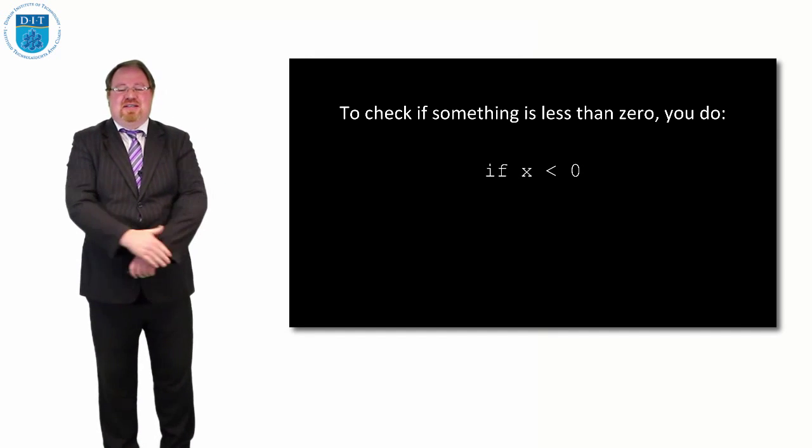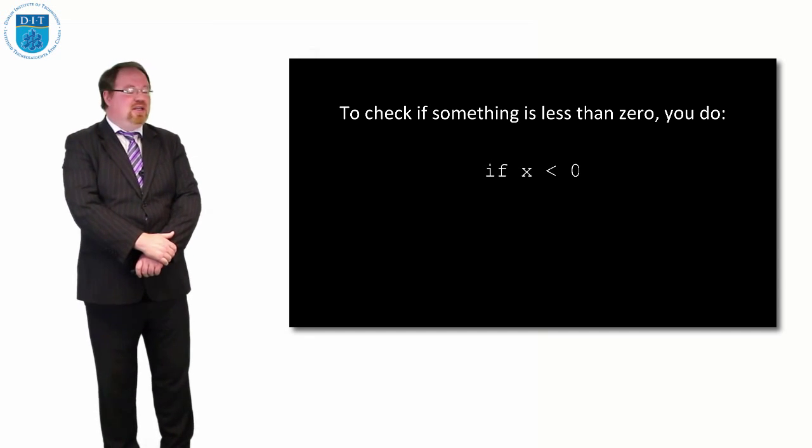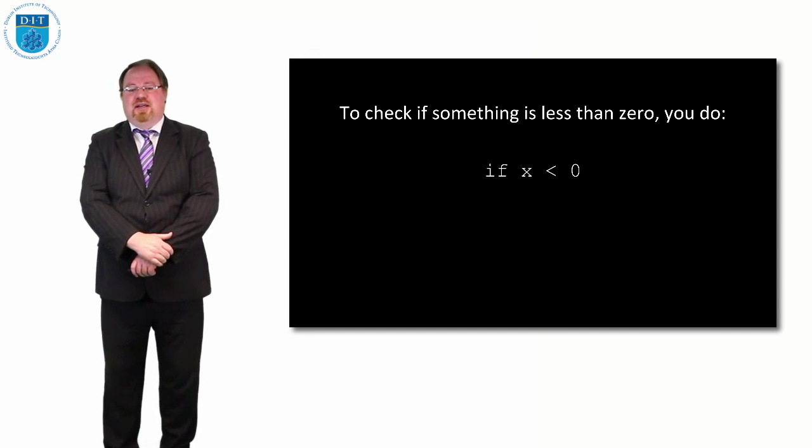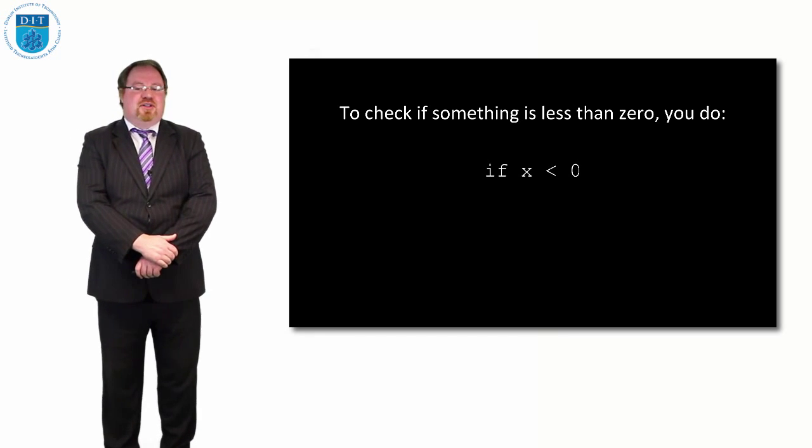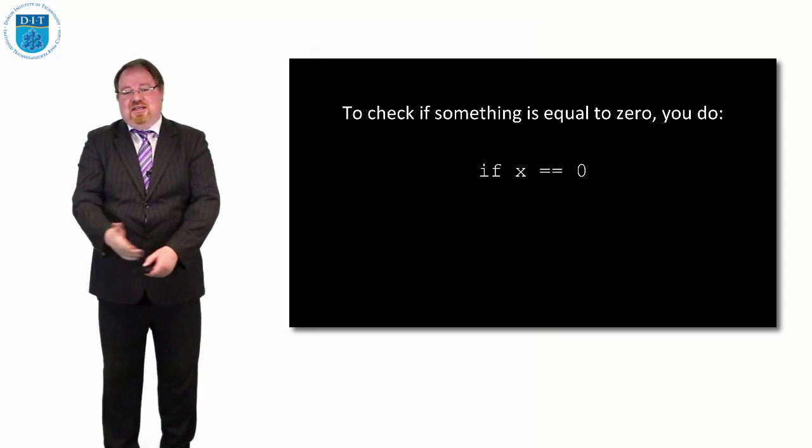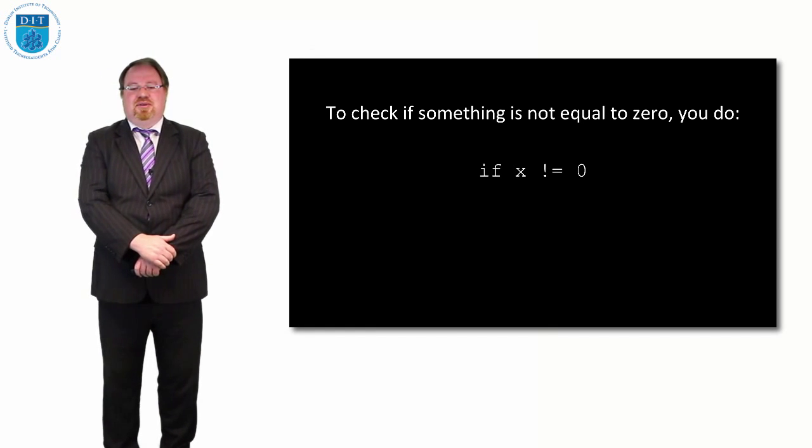If I want to check if something is less than zero, we can use any number. We can use the number zero in our if statement. And again, if we want to see if x is less than zero, the crocodile is eating the zero. If I want to check if x is equal to zero, then it's equals equals. If I want to check if x is not equal to zero, it's not equal the same way.